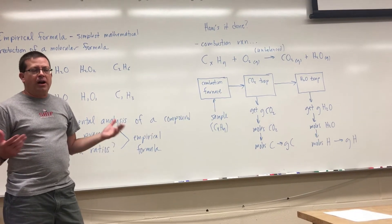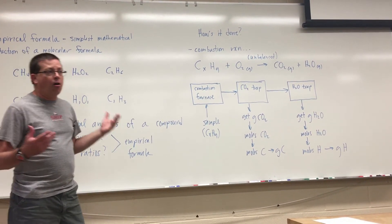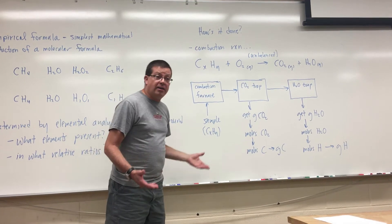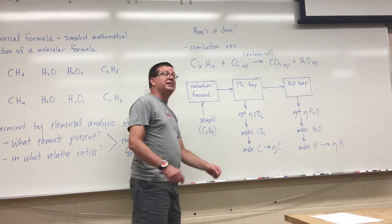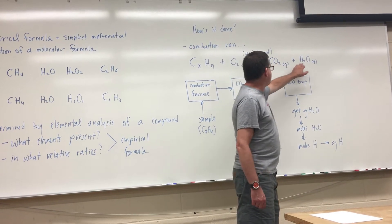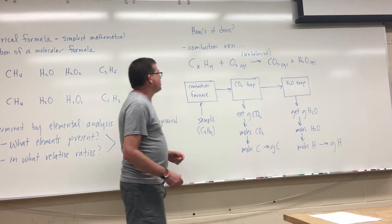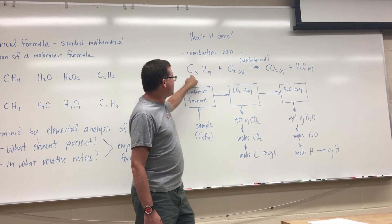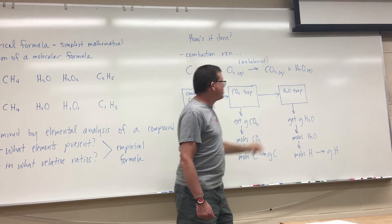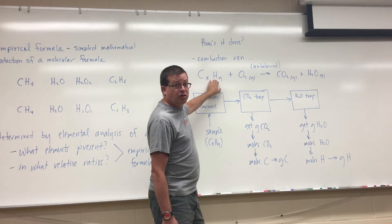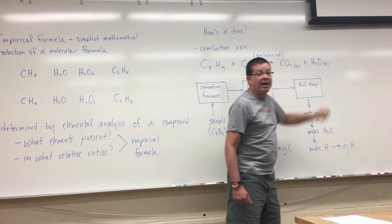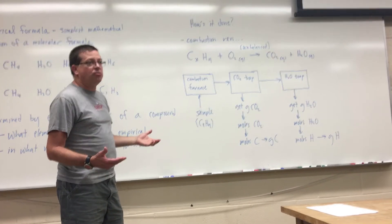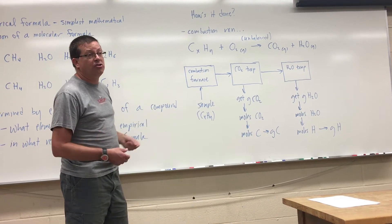Combustion products for compounds that contain carbon and hydrogen are always the same. If I have a compound that contains only carbon and hydrogen — a hydrocarbon — and we burn it in excess oxygen, there are only two products: carbon dioxide gas and water vapor. All of the carbon originally in the compound is converted to carbon dioxide. What I ultimately want to know is how much carbon and how much hydrogen I'm getting out of the compound as combustion products.